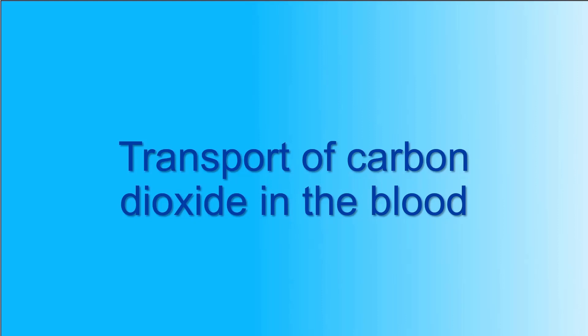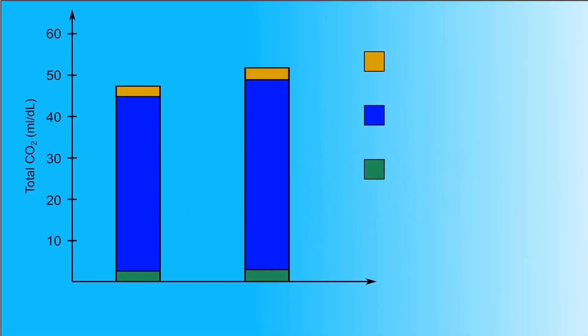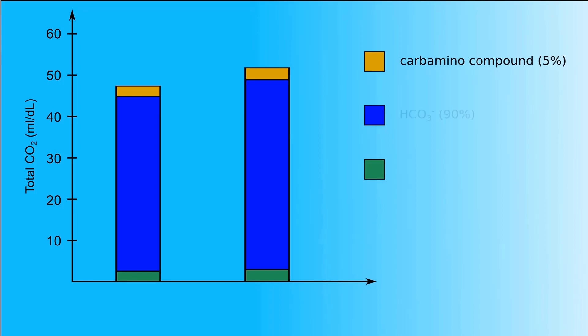Only a small amount of carbon dioxide is carried in the dissolved state, while the main part is chemically bound. The chart depicts the percentage of different forms of CO2 transport. The yellow sub-bar designates the carbamino compound, formed when carbon dioxide reacts with amino groups of proteins. Five percent of CO2 is carried in this form.